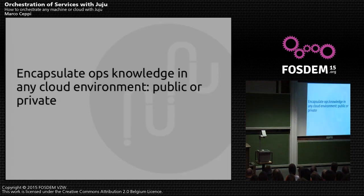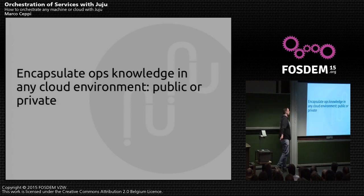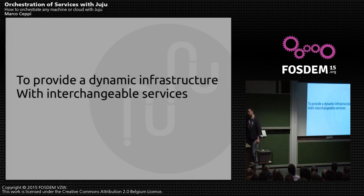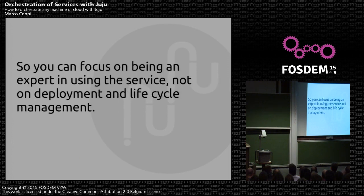Juju has a goal of encapsulating ops knowledge in any environment, whether it's a public or private cloud. We also want to provide a dynamic infrastructure with interchangeable services. We've effectively turned infrastructure-as-code into interchangeable parts like a factory line — so that you can focus on being an expert in using your services and not on knowing how to deploy and run the service lifecycle management of those services.